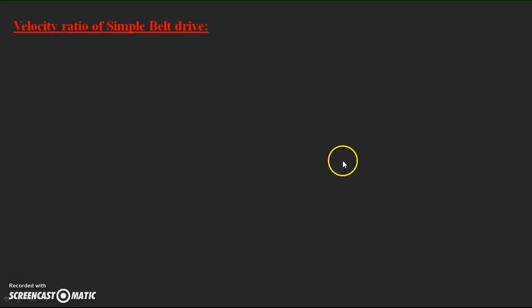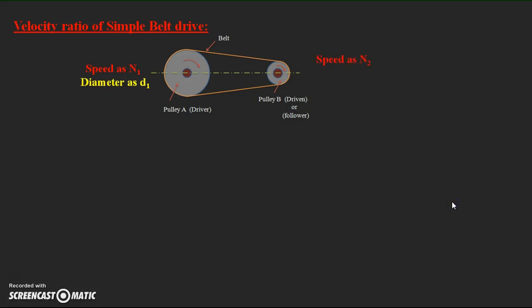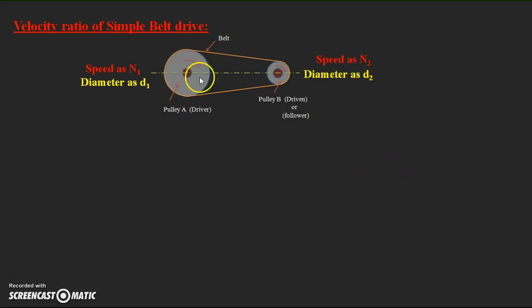First we try to find the velocity ratio for the simple belt drive system. Assume speed N1 and diameter D1 for the driver pulley. Similarly for the follower, assume speed N2 and diameter D2.